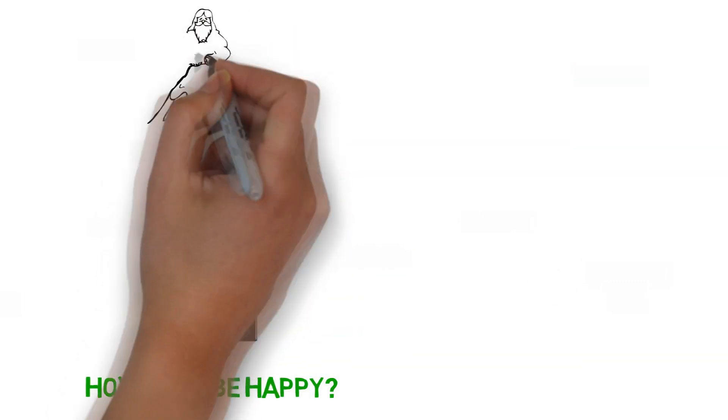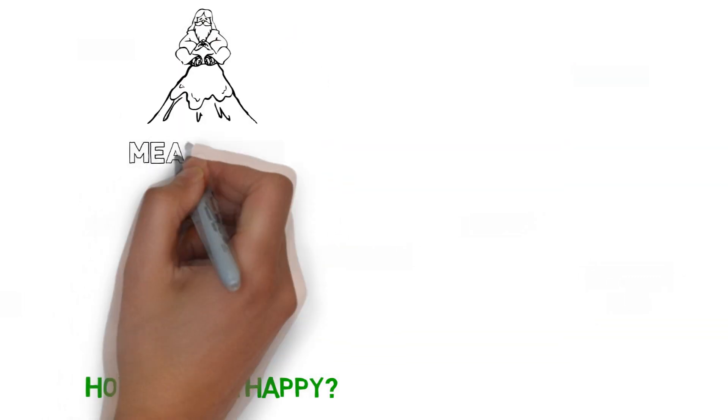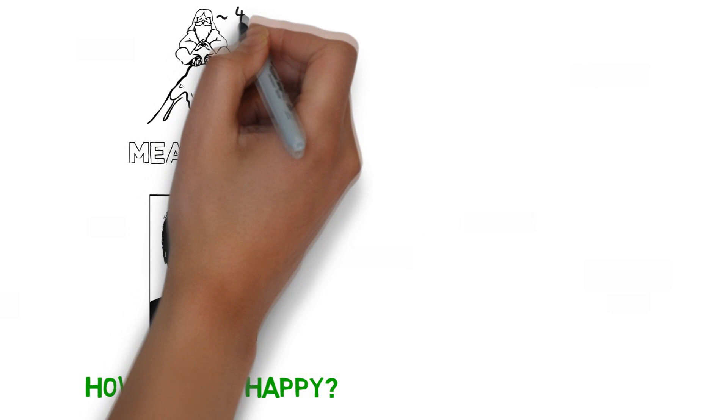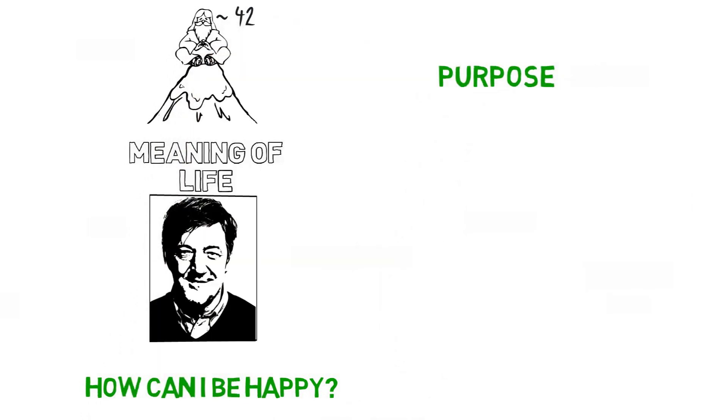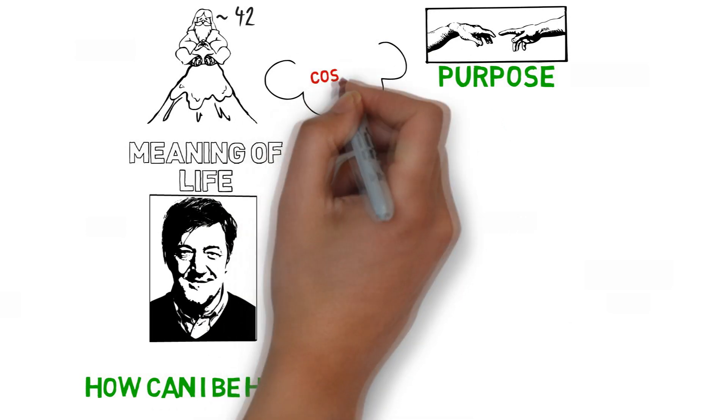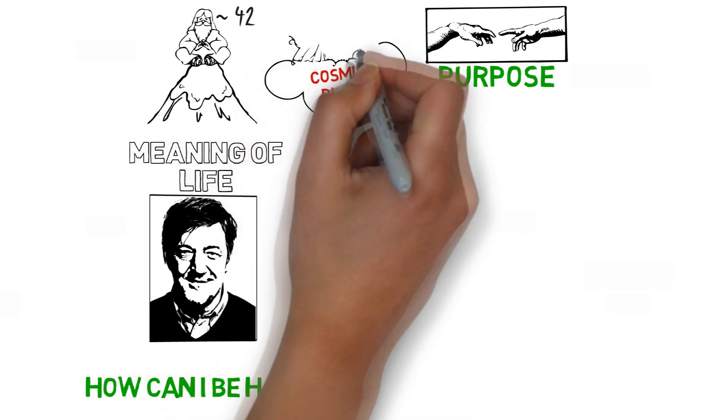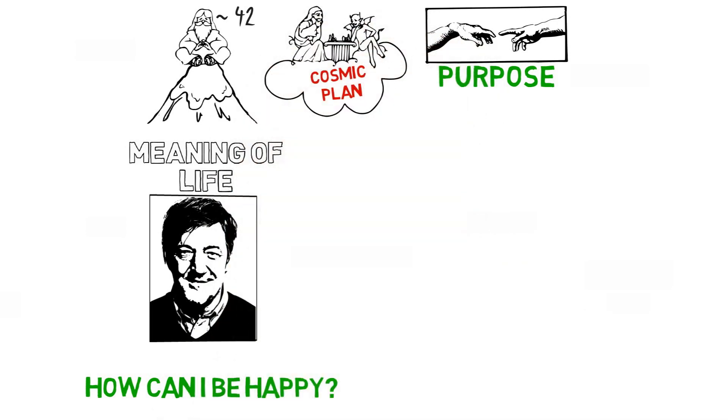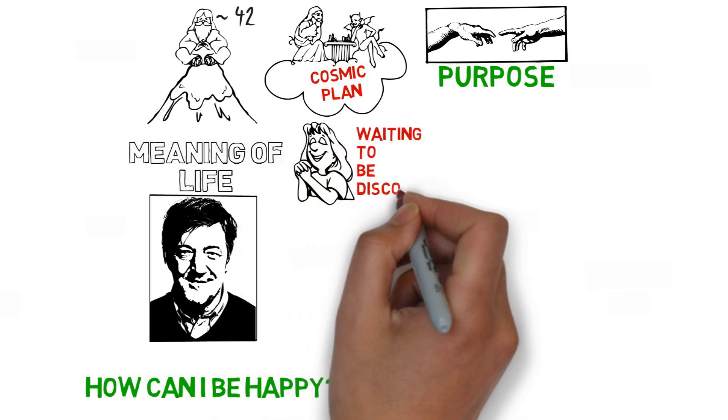Some people believe that there is one single meaning of life. They think that the universe was created for a purpose and that human beings are part of some larger cosmic plan. They think our meaning comes from being part of this plan and is written into the universe waiting to be discovered.